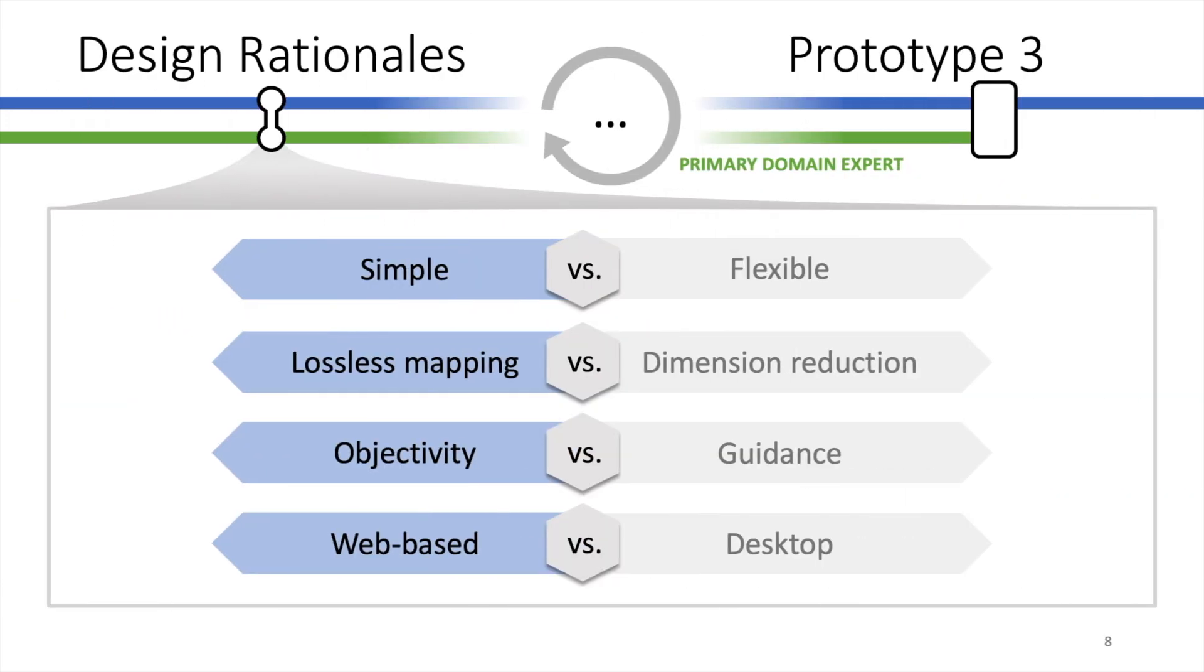As a complement to the low-level requirements, we also defined four higher-level design rationales, where blue indicates the property we prefer. The most relevant properties for our design were the first two. Preferring simple over flexible relates to the user interaction and originates from the elimination by aspect strategy, where filtering is the prevalent form of user interaction. We think that filtering should not demand more effort than absolutely necessary, and it is our ambition to reduce the interaction to the minimum of operations required.